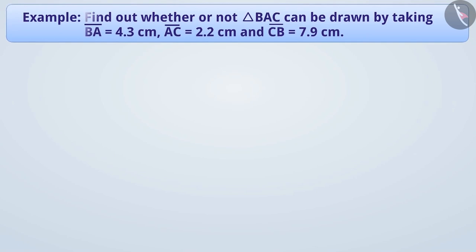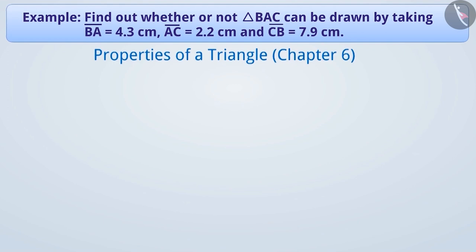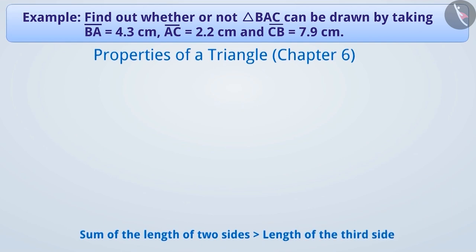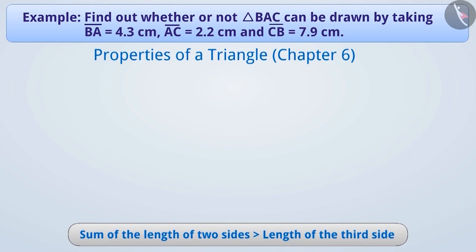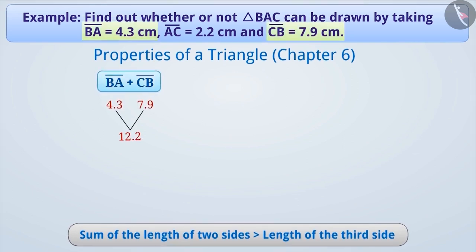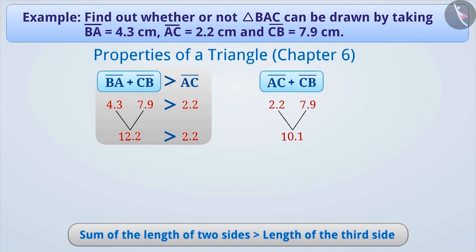Next example: Find out whether or not triangle BAC can be drawn by taking the measurements BA = 4.3 cm, AC = 2.2 cm, and CB = 7.9 cm. We recall from Chapter 6, Properties of Triangles, that the sum of the lengths of any two sides of a triangle is greater than the length of the third side. The sum of BA and CB is 12.2 cm, which is more than AC. Also, the sum of AC and CB is 10.1 cm, which is more than BA.